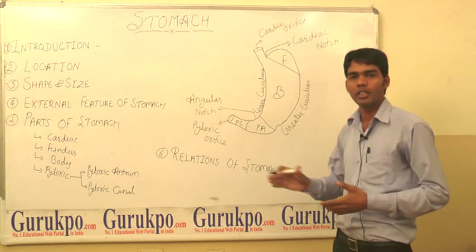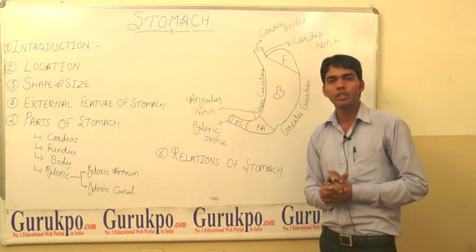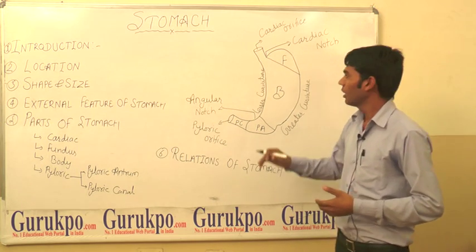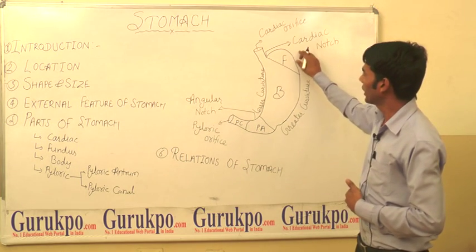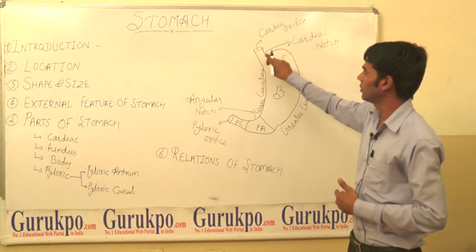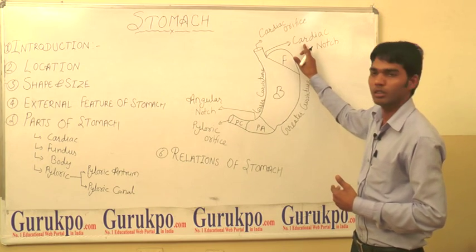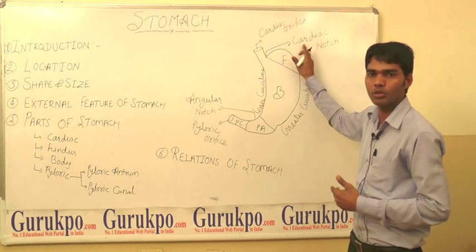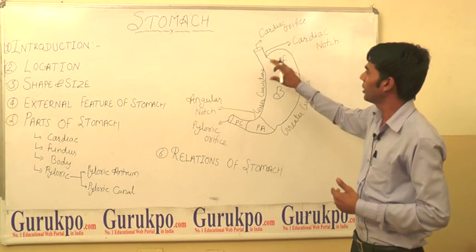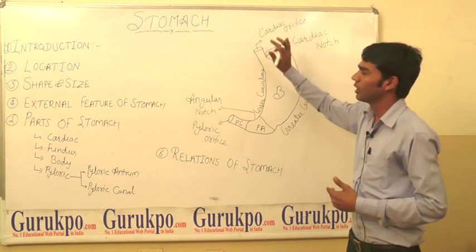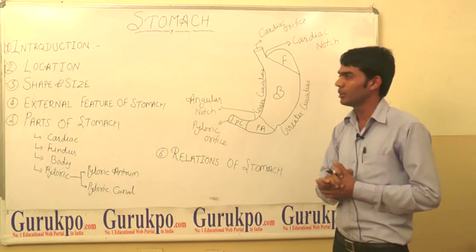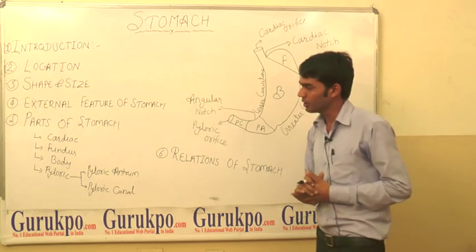It provides attachment to the greater omentum. The greater curvature at its upper side has a cardiac notch that separates it from the cardiac orifice.